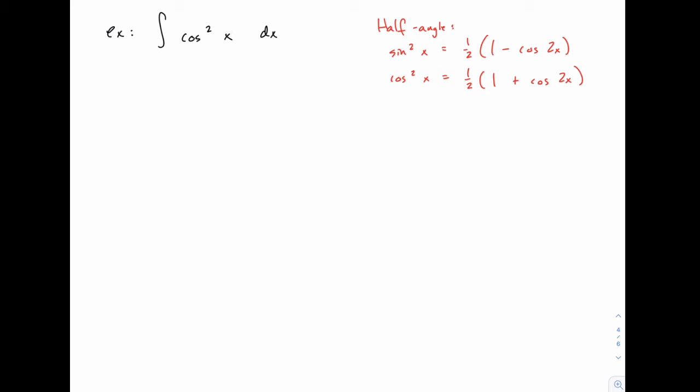Now when we do this we're going to have a cosine of 2x in our answer. So we need to be able to integrate cosine of 2x, but that's something that we've done plenty of times when we first learned about u substitution.